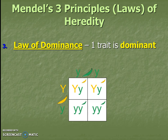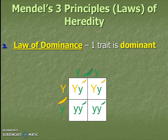Last but not least, there is the law of dominance. Mendel saw through experimentation that some versions of traits — which we now know are alleles — will mask recessive ones. He saw that mostly with his tall and short plant experiment. One version of the trait will be dominant and the other will be recessive. So those are our three Mendel's laws; we will practice them when we get back to class.